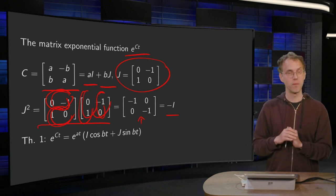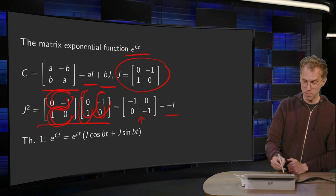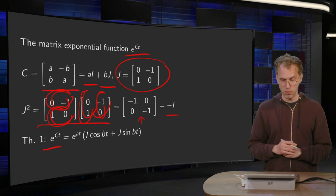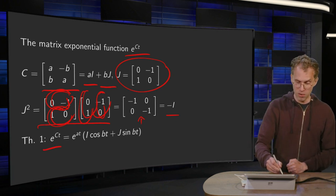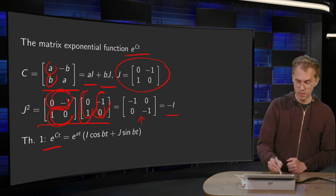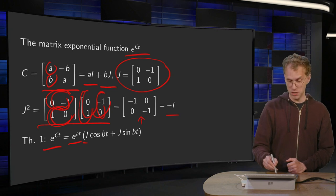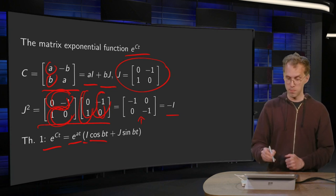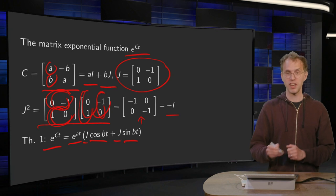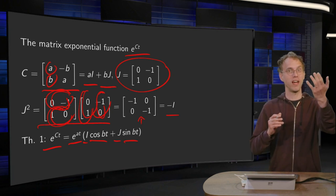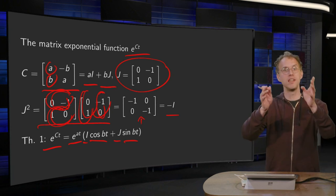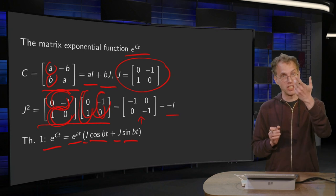We will use that later on. And then we have our theorem. E to the power ct - how do you compute it? Well, you need only a and b, the numbers a and b. E to the power at times the identity matrix times cosine bt plus j matrix times sine bt. So if you have a and b, you can write down immediately what e to the power ct is.